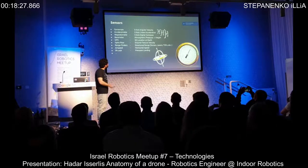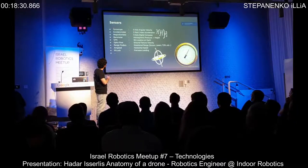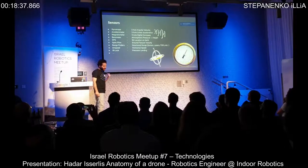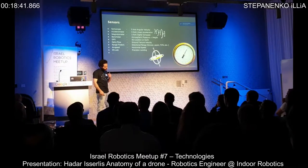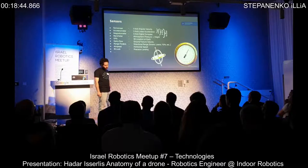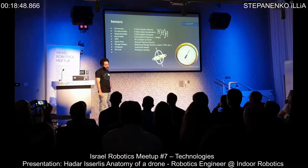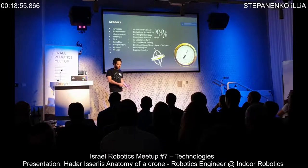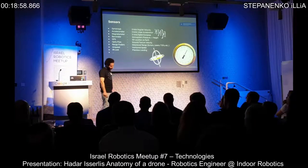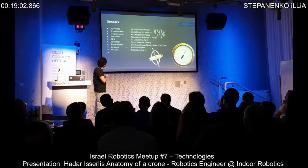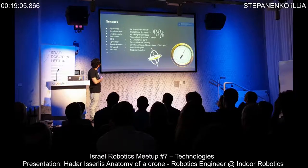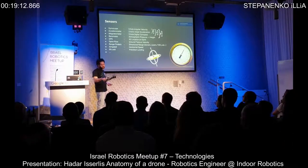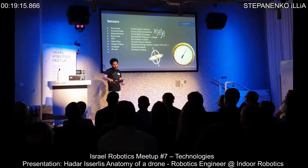Inside these flight controllers there are several sensors. The gyroscope is actually the first and most basic one. The drone I showed you earlier was built with only a gyro board taken out of a Wii console, with some code written in Arduino — open source. This is the basic sensor you need. The gyroscope measures angular velocity: how fast you're rotating in each of the axes.